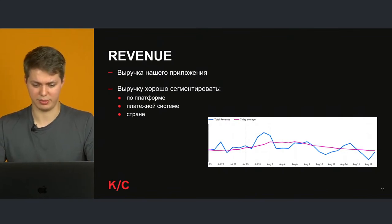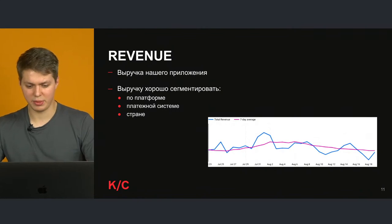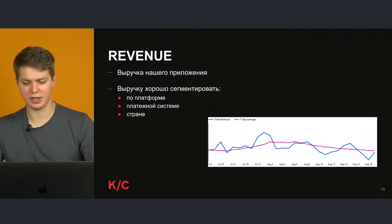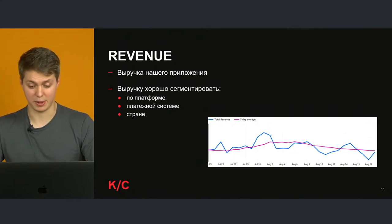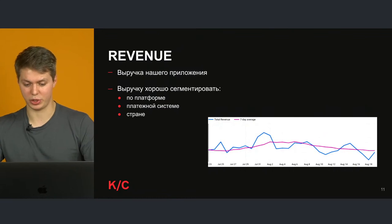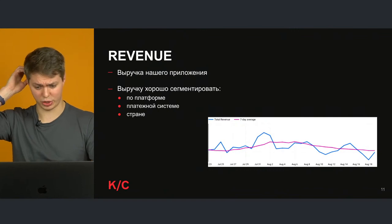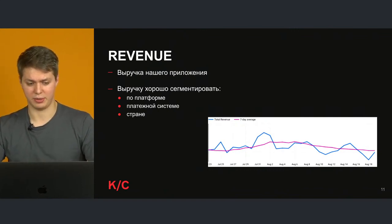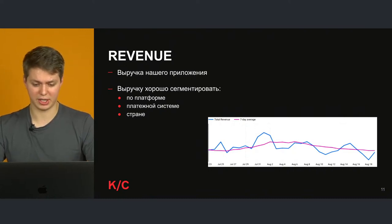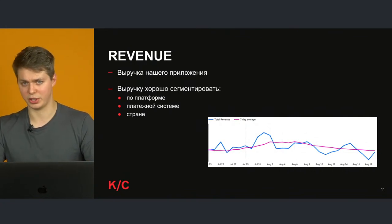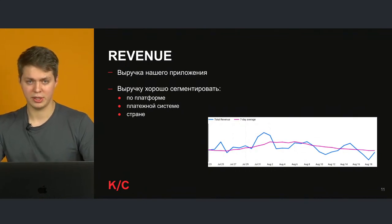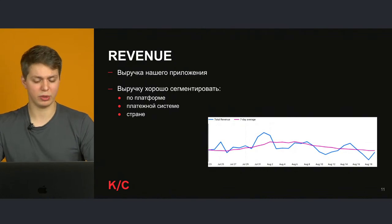На графике видна картинка, которую я использую сам в работе: Total Revenue по дням и скользящее среднее выручки за 7 дней. Голубая линия колеблется, а среднее более гладкое. Вместе хорошо видно, в какие дни выручка сильно колеблется. Если она растёт в выходные, потому что у нас развлекательное приложение, и падает в будние дни — это нормально: люди больше работают и меньше развлекаются.